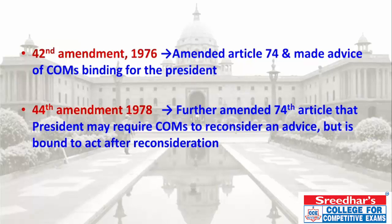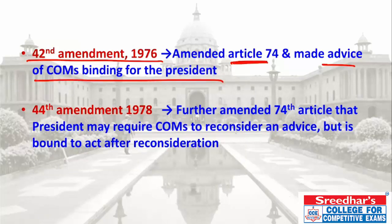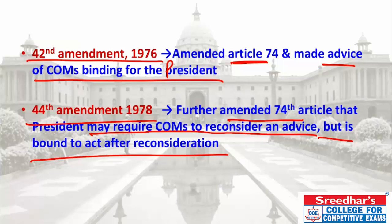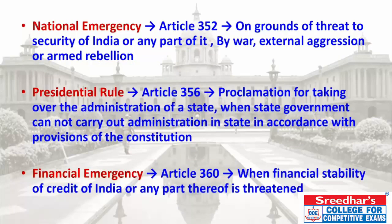Regarding constitutional amendments: the 42nd Amendment of 1976 made it compulsory for the President to act on the advice of Cabinet Ministers under Article 74. The 44th Amendment of 1978 modified Article 74 to allow the Cabinet of Ministers to send advice back for reconsideration once. However, after reconsideration, the President is bound to accept the advice.